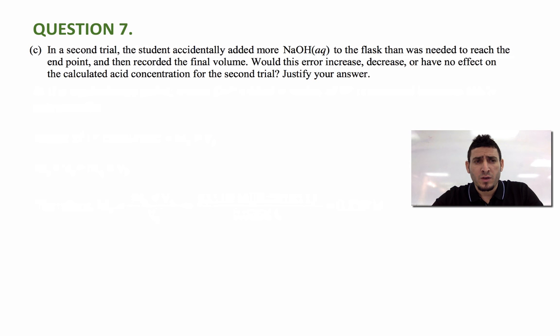Let's move on now to the last part in this question. It says in a second trial the student accidentally added more NaOH to the flask than was needed to reach the end point and then recorded the final volume. Would this error increase, decrease or have no effect on the calculated acid concentration for the second trial? Justify your answer.